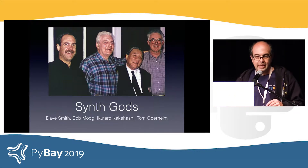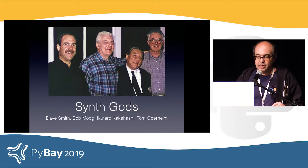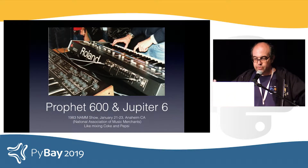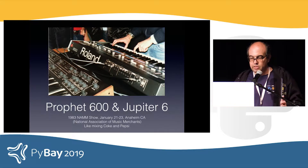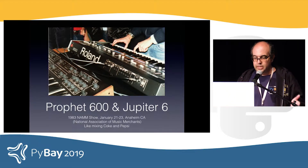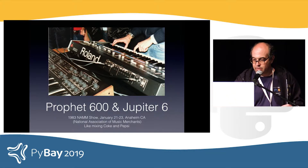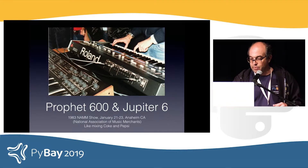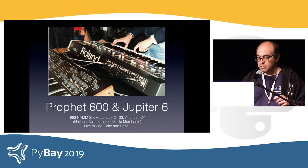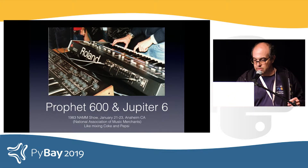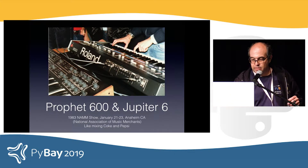But in 1983, two different vendors brought two different keyboards that could talk to each other over MIDI — and that's like Coke and Pepsi working together. It was a Jupiter 6 and a Prophet 600, at the beginning of 1983.